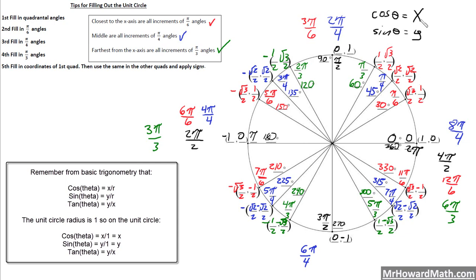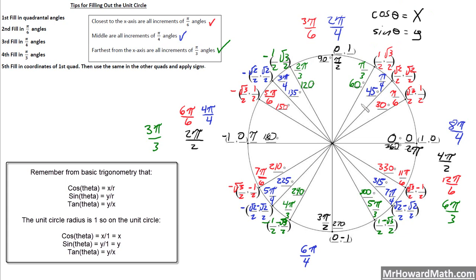As a recap, cosine theta is equal to the x-coordinate, and sine theta is equal to the y-coordinate on the unit circle. That's the most important part of the unit circle — knowing this fact is where it really helps us quickly get these important cosine and sine values. The tangent value would just be the y-coordinate divided by the x-coordinate on the unit circle. That's the same definition we used when we discussed basic trigonometry.